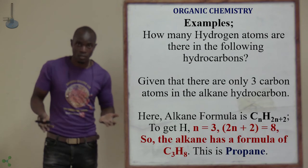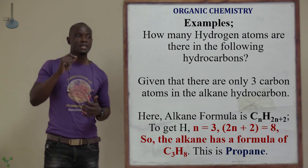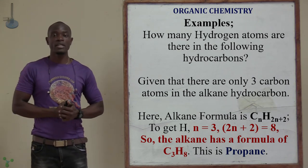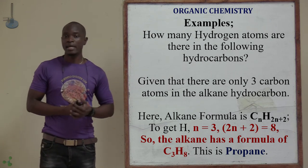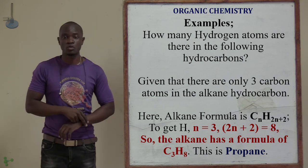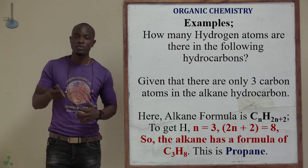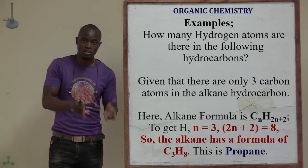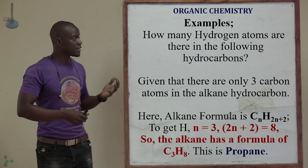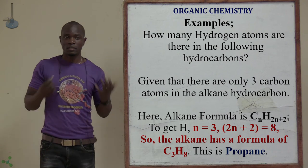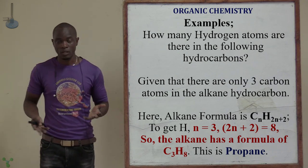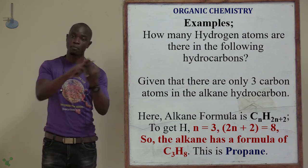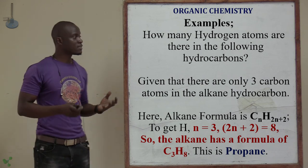Similarly, if given three carbon atoms, calculate the number of hydrogen atoms. Since N equals three, using the formula we get C3H(2×3+2), so the hydrogens are eight. For part B, the hydrocarbon is propane — we have three carbon atoms, so the prefix is 'prop', it's an alkane, so the name ends with A-N-E: propane.